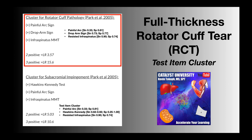The positive likelihood ratio is 15.6. When you have a positive likelihood ratio of at least 10, that is excellent evidence that the person has the given pathology. Given that this is 15.6 — quite a bit above 10 — if all three of these are positive, you can pretty definitively say that they have a rotator cuff pathology.